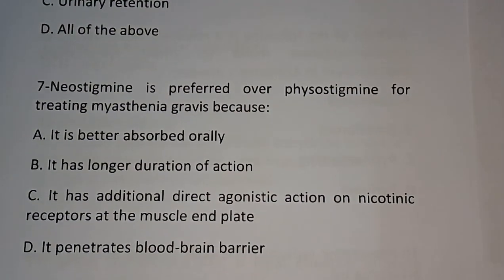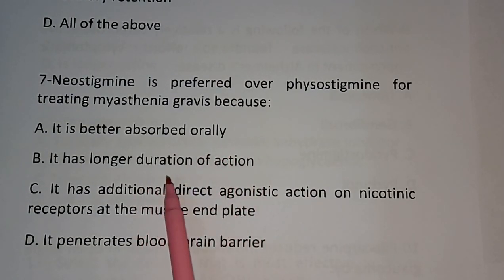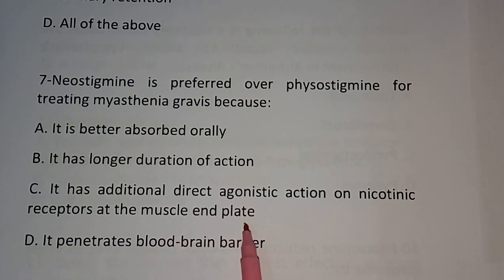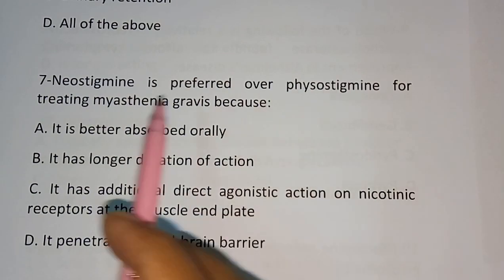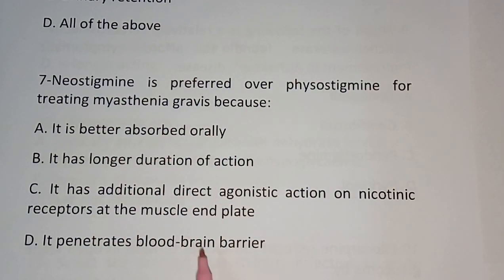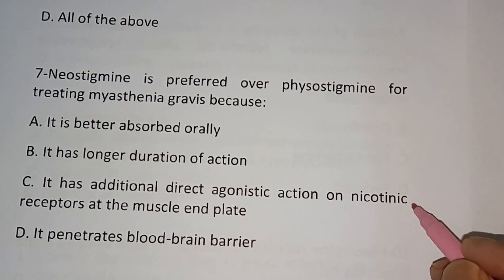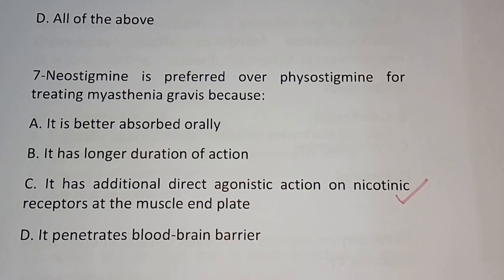Question number seven: Neostigmine is preferred over physostigmine for treating myasthenia gravis because — (A) it is better absorbed orally, (B) it has longer duration of action, (C) it has additional direct agonistic action on the nicotinic receptor at the muscle end plate. The correct answer is option C — additional direct agonistic action on the nicotinic receptor at the muscle end plate.